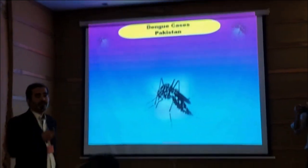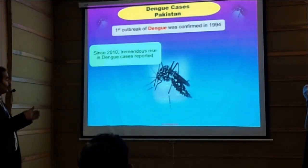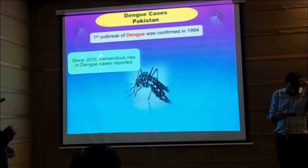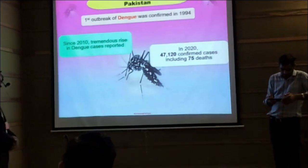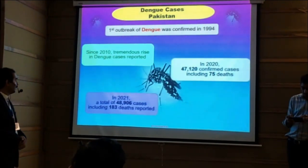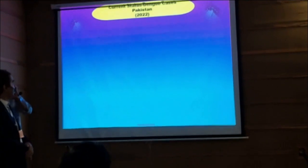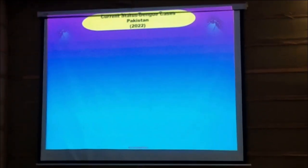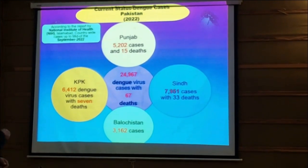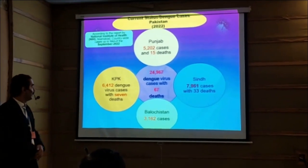Dengue in Pakistan — what is the status? The first outbreak of dengue was confirmed in 1994, and another mild outbreak was observed in 2005. Up to 2010, there was a prominent increase of dengue cases in Pakistan. In 2020, 47,120 confirmed cases with 75 deaths were reported. In 2021, 48,906 cases were observed with 183 deaths. The current status of dengue in 2022, up to September, according to the report of the National Institute of Health NIH Islamabad, the overall 24,967 dengue virus cases were reported with 67 deaths.